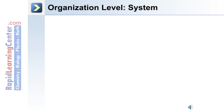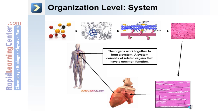The system level of organization: organs work together to form a system. For example, the cardiovascular system. A system consists of related organs that have a common function.